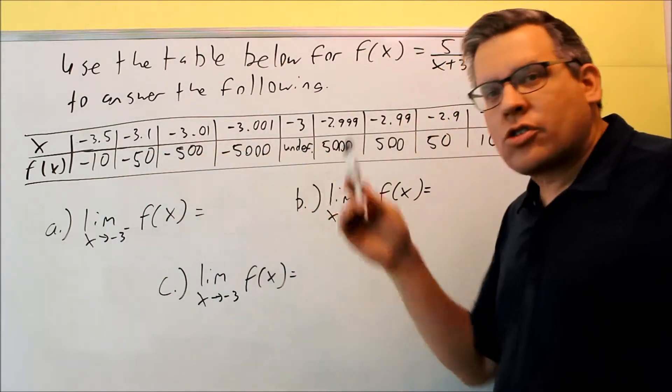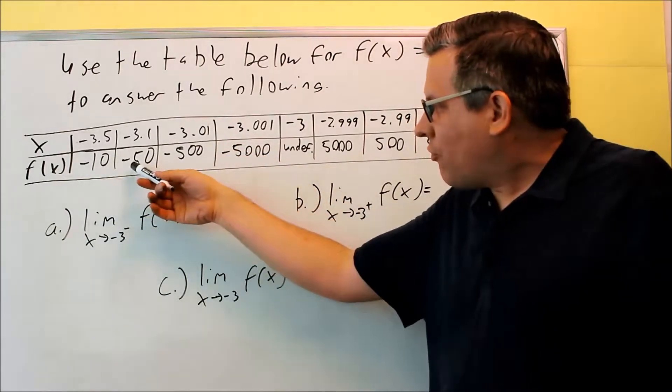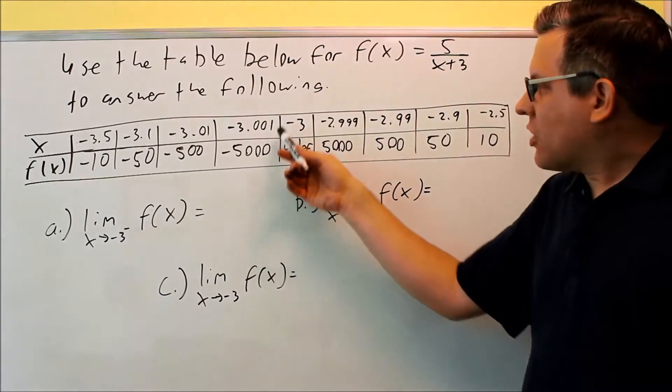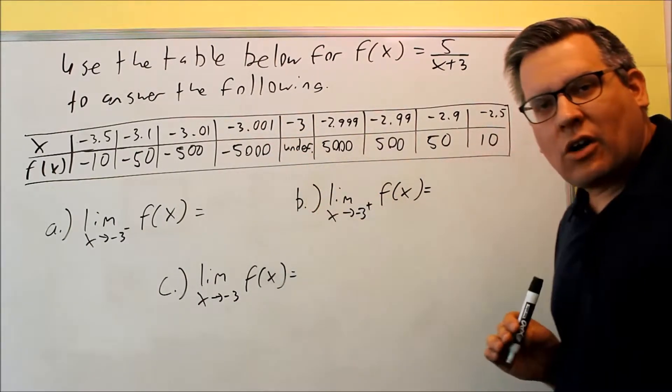So in fact, we're getting larger and larger negative numbers: negative 10, negative 50, negative 500, negative 5,000. What's happening is that as I add more 0s inside, that's going to add more 0s down here.